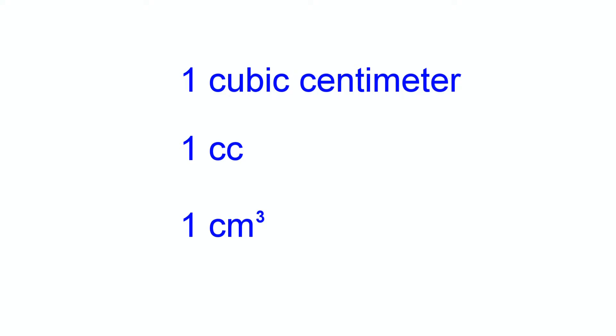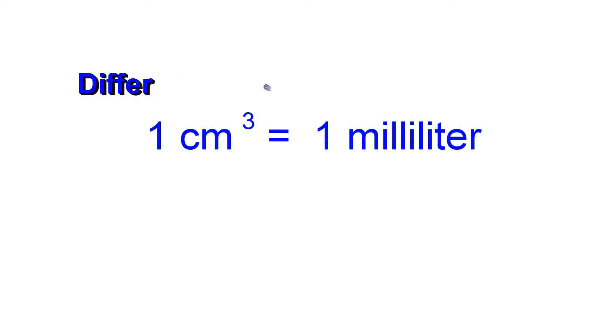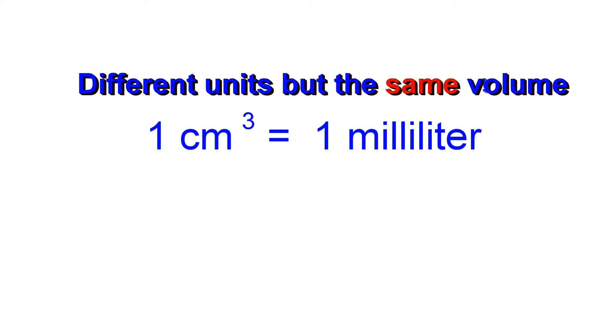The cubic centimeter is one of the most important units of volume in the study of chemistry, so you need to become very familiar with its approximate size and conversion factors for other units. One conversion factor that you really need to know is that the volume of one cubic centimeter is equal to the volume of one milliliter.